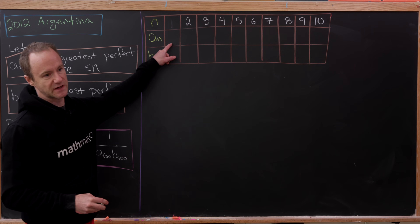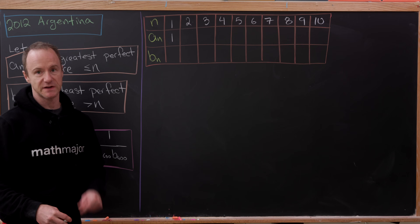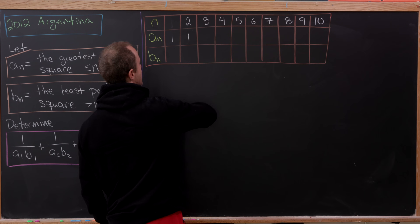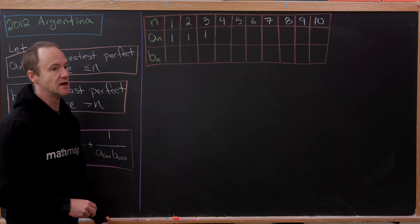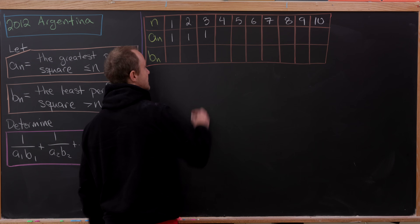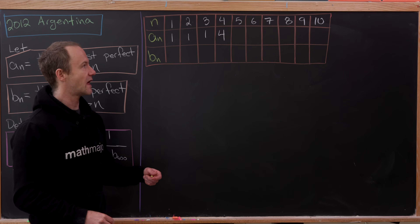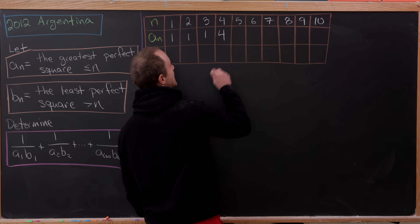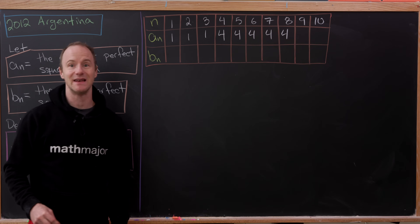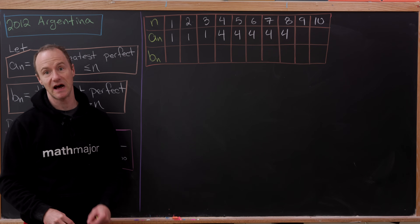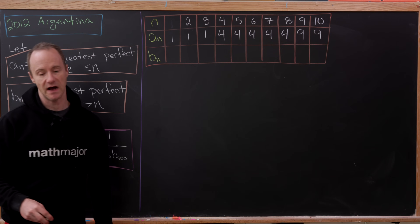Let's apply the rule for generating a_n and b_n. The greatest perfect square less than or equal to 1 is 1. The same holds for 2 and 3. But the greatest perfect square less than or equal to 4 is 4, because 4 is itself a perfect square. Then we'll have 4 repeated up until we hit 9, where the greatest perfect square less than or equal to 9 is 9. For n equals 10, we also have 9.